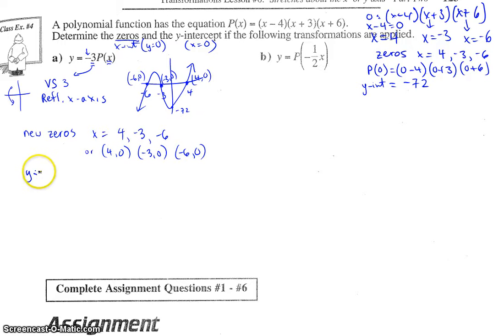Now the y-intercept. Both of these transformations up here affect y. Vertical stretch, that's y. Reflection over the x-axis, again, that's y. So -72, if we take that point (0, -72) and we vertically stretch by a factor of 3, that point would become -72 times 3, which would be -216, I believe.